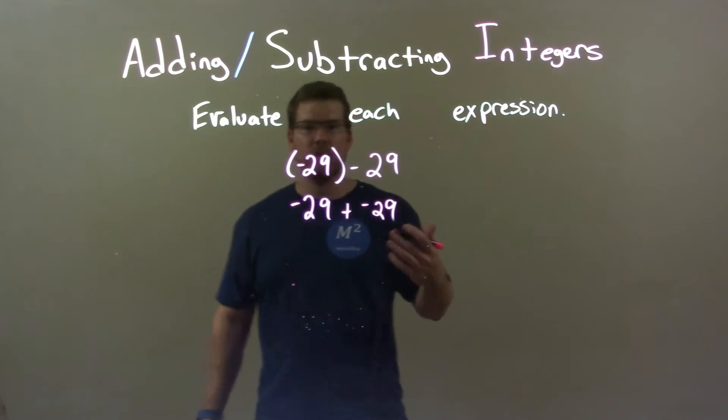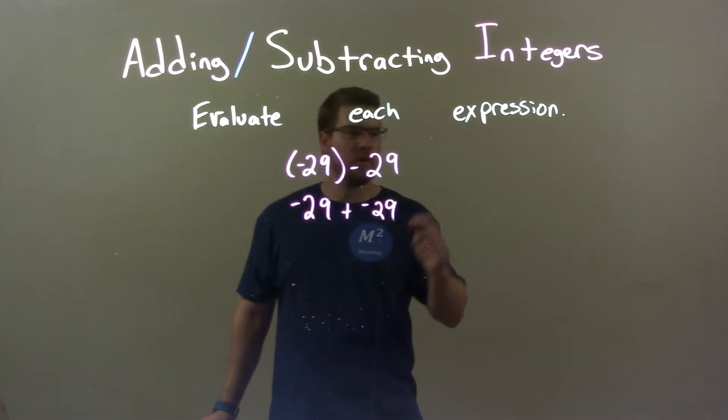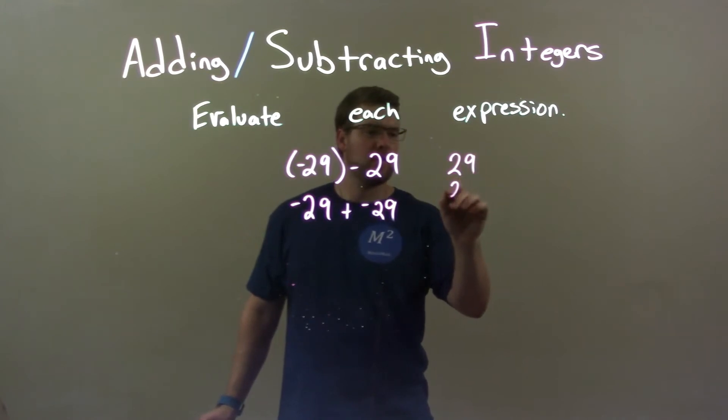Well since they're both negative, we know we're having a larger negative number. We could add this the traditional way, 29 plus 29, and make sure we slap on negatives at the end.